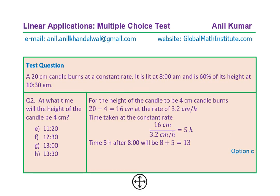Now let's look into part B: at what time will the height of the candle be 4 centimeters? We need to find how much time it takes to go from 20 to 4 — that is, burn out 16 centimeters. The rate is constant at 3.2 centimeters per hour. Dividing the change in height by the rate: 16 divided by 3.2 gives us 5 hours. So 5 hours from 8 a.m., the height is going to be 4 centimeters — that is 1 p.m. Therefore, option C is the correct answer for part B.